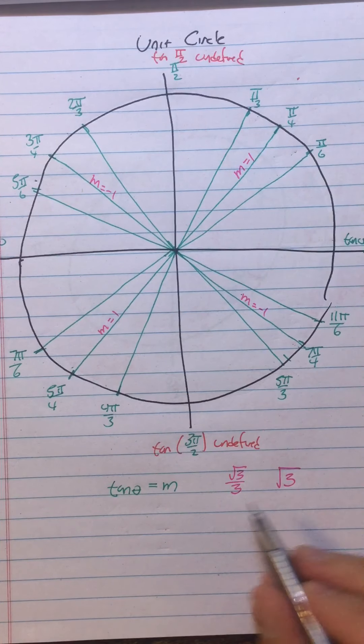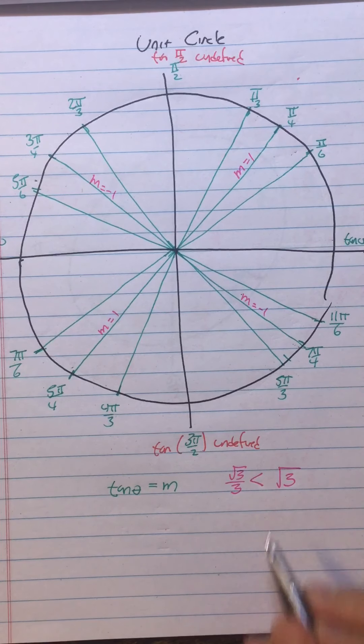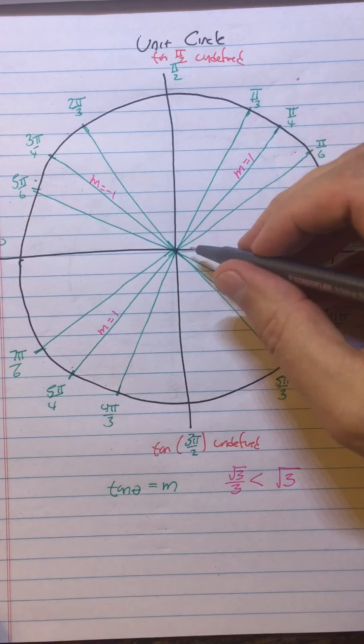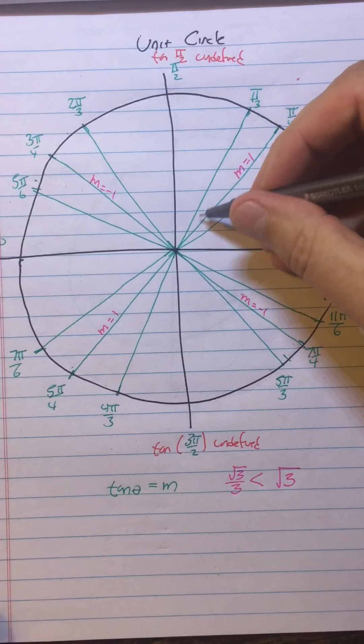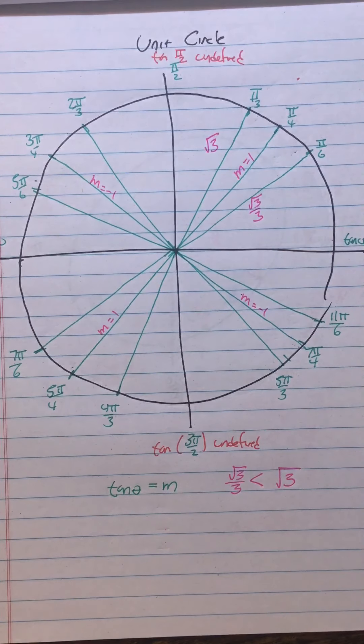And you want to think, if I take a positive number divided by 3, I'm going to get something smaller. Therefore √3/3 is smaller than √3. So the rest of the tangents you can get by looking at the slope and just saying, is it a large slope or a small slope? This segment is not steep, so it's the small slope. This segment is steep, so it's the large slope. Isn't that easy?